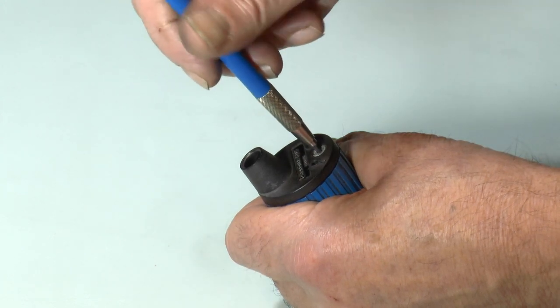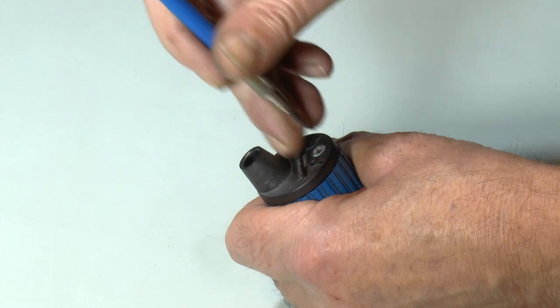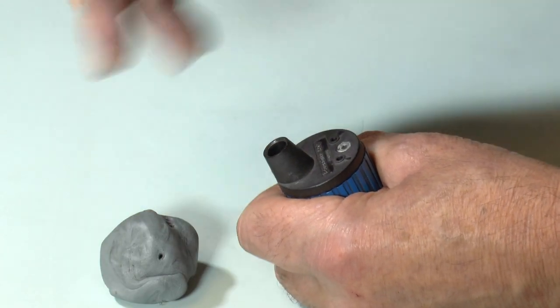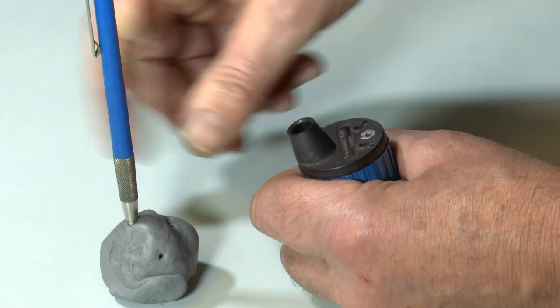Any graphite dust on the point can be removed by gently twisting it into the fiber insert. Although I prefer a bigger target and just poke it into a ball of blue tack.